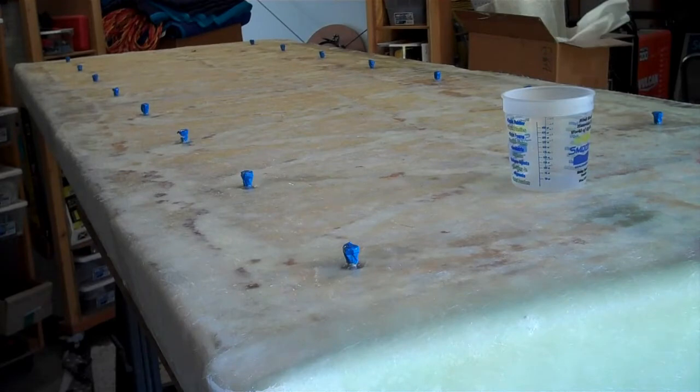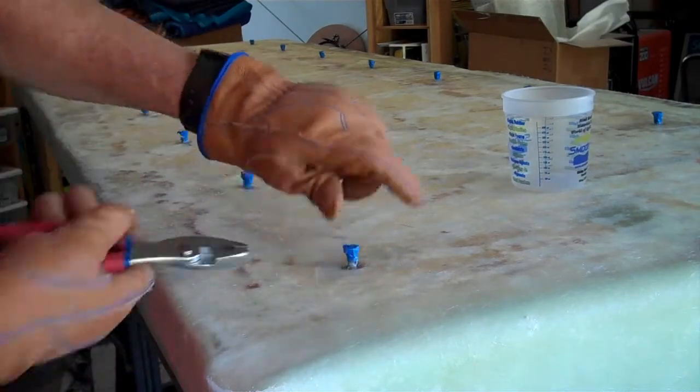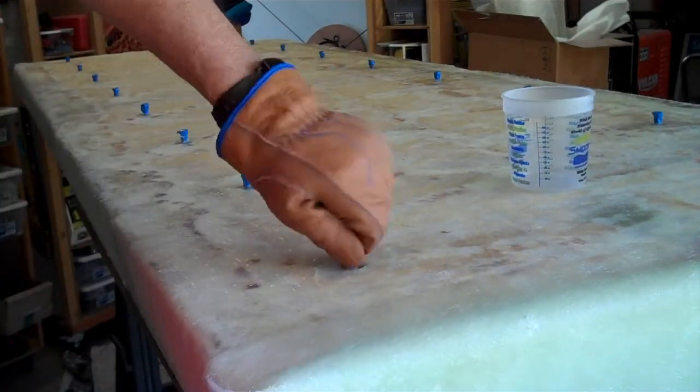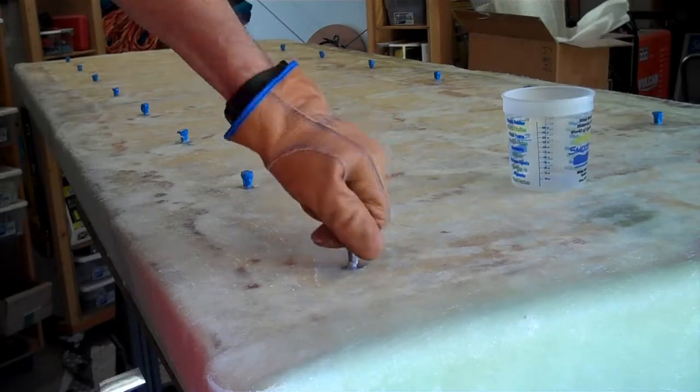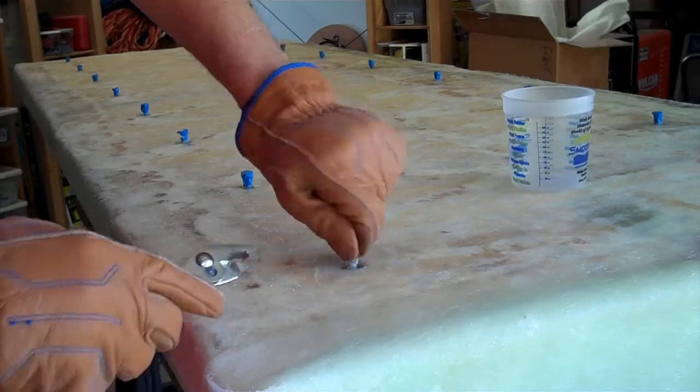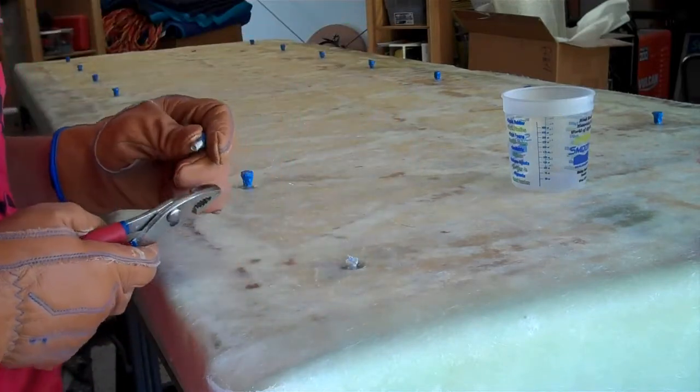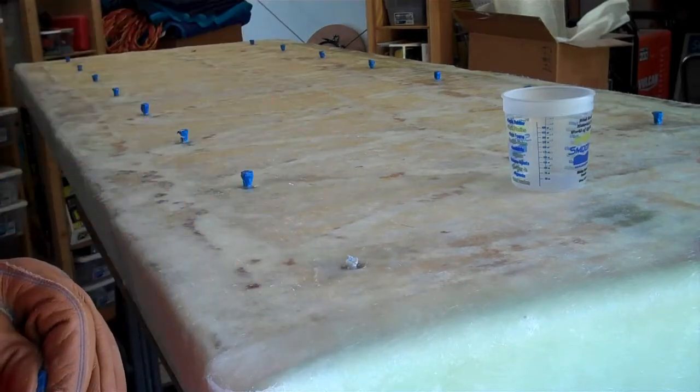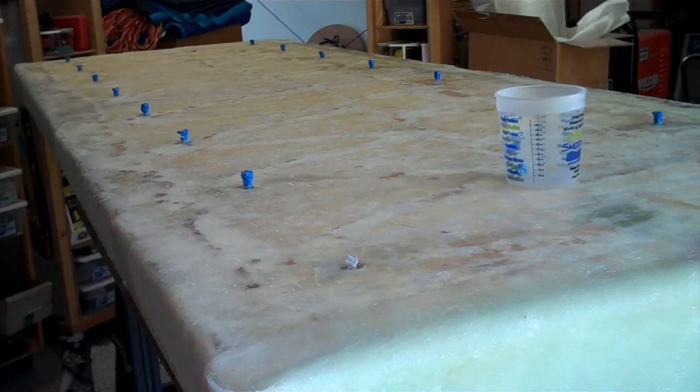It's been 24 hours, so the epoxy is cured plenty enough to remove these guys and then sand the top down. Because we have these bolts going through here, you're going to see there's some epoxy in kind of a little thing that sticks up right there. So we're going to sand all that down and then put a few more layers of chop strand mat on top for strength. First, we have to remove all these guys.